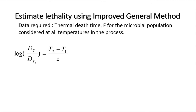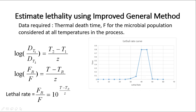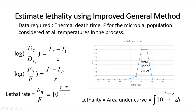Since F can be expressed as multiples of D, by replacing D in this equation with F we get a new equation. Taking the log of that equation gives us: when we know the thermal death time F at a reference temperature T-R, we can find the thermal death time F at any temperature T. This equation can be defined as lethal rate — it indicates the proportion of the thermal death time at temperature T to the thermal death time at reference temperature T-R. By plotting lethal rate versus time, we get the lethal rate curve, and the area under this curve is known as lethality, L.